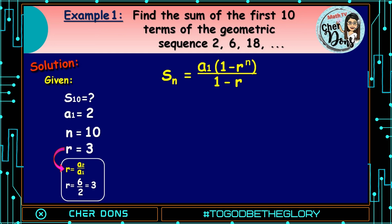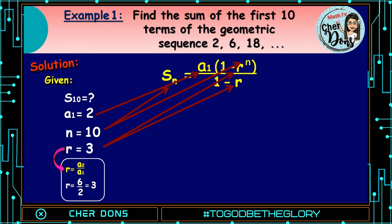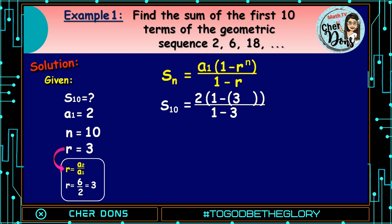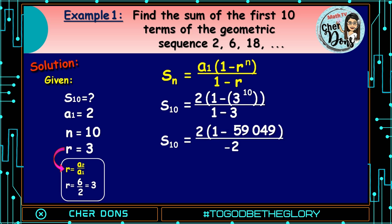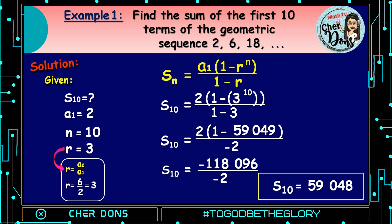Applying the formula, S of n is equal to a sub 1 multiplied by quantity 1 minus r raised to n, all over 1 minus r. Where 2 goes to a sub 1, 10 goes to n, and 3 goes to r. We have S of 10 is equal to 2 multiplied by 1 minus 3 raised to 10, and that is equal to 59,049, all over 1 minus 3. S of 10 is equal to 2 multiplied by 1 minus 59,049, all over negative 2. Calculating the value, S of 10 is equal to negative 118,096 all over negative 2, and that is equal to 59,048. Therefore, the sum of the first 10 terms is 59,048.